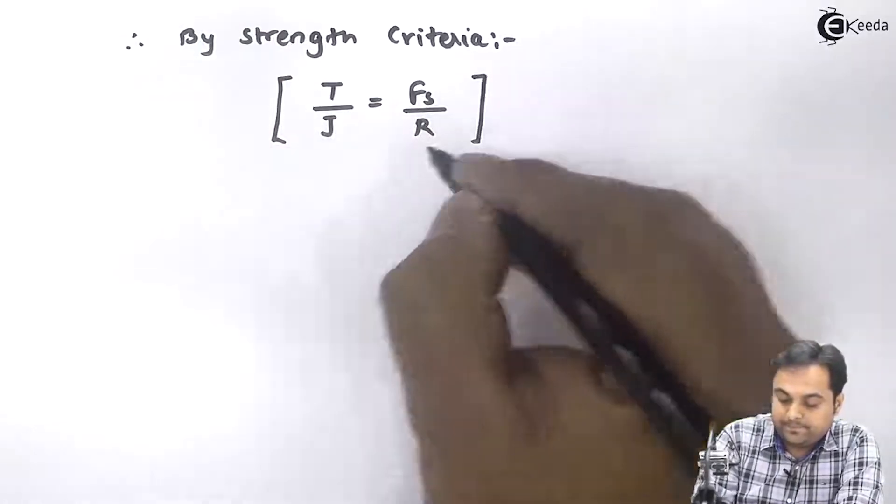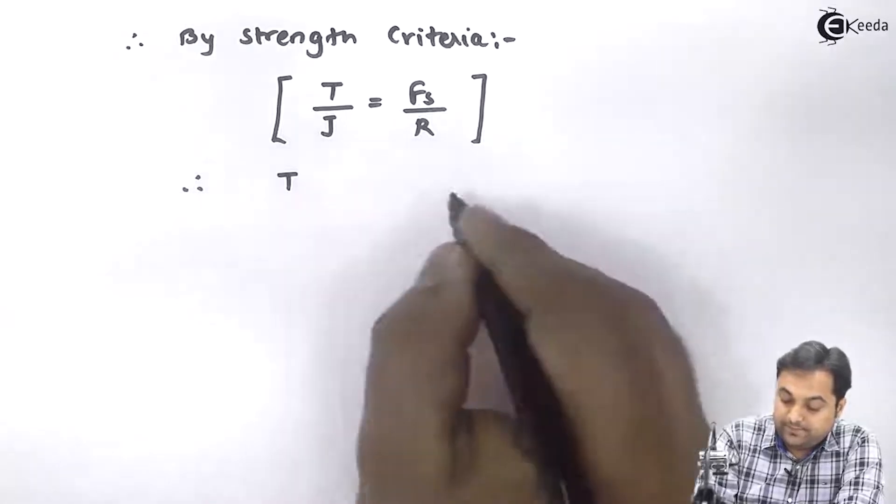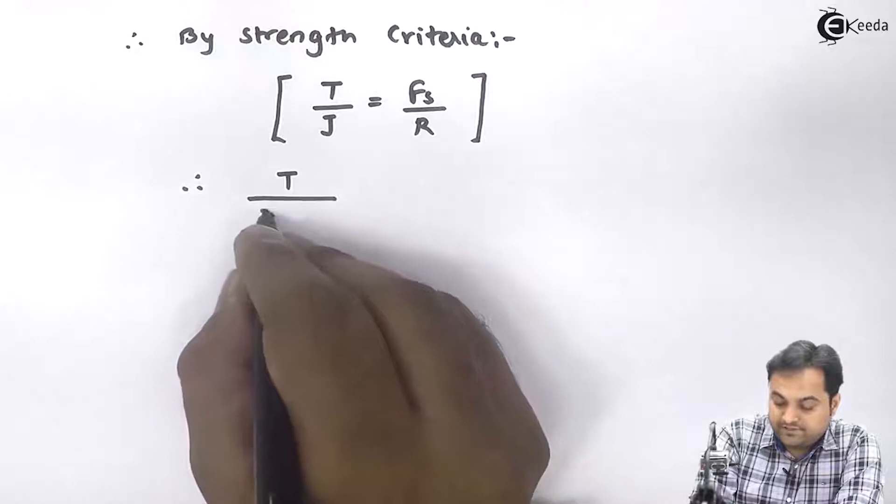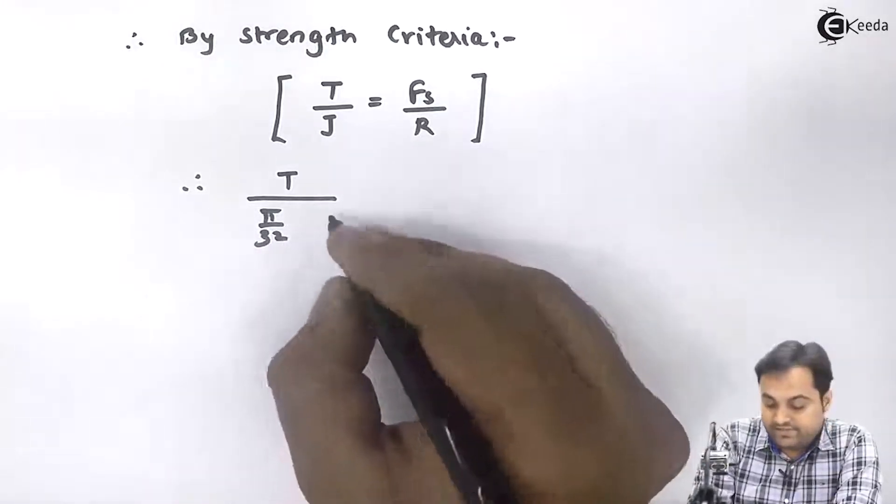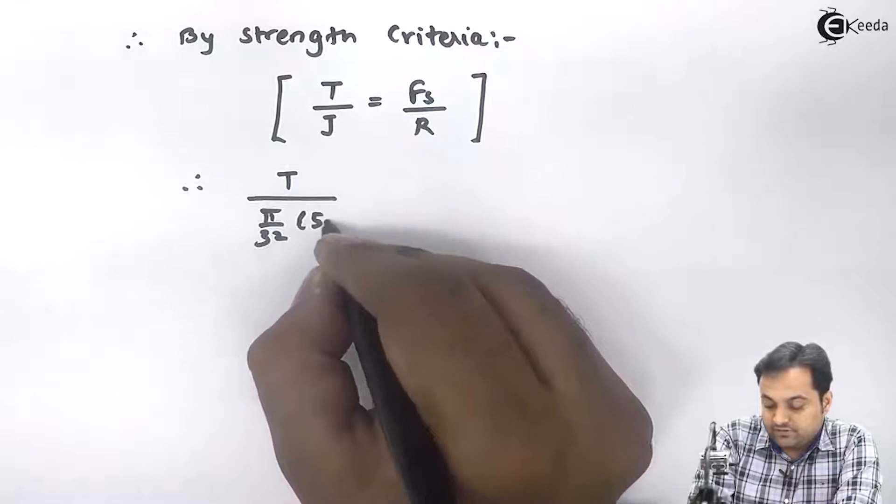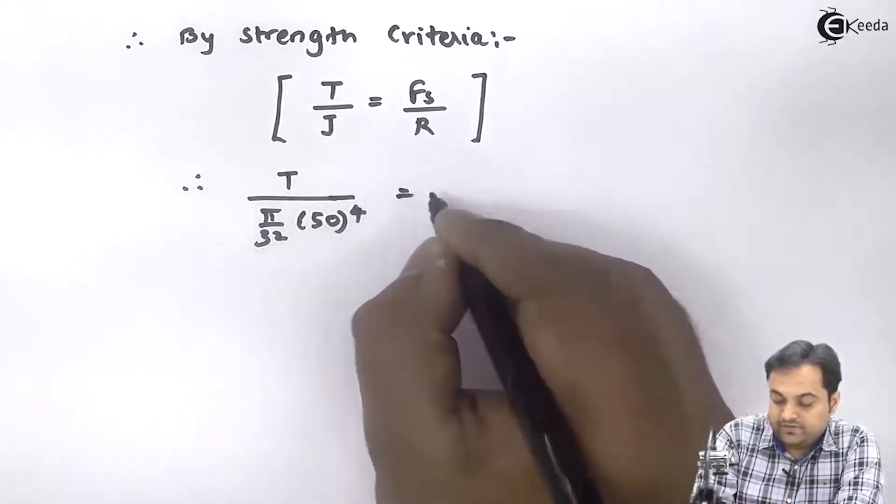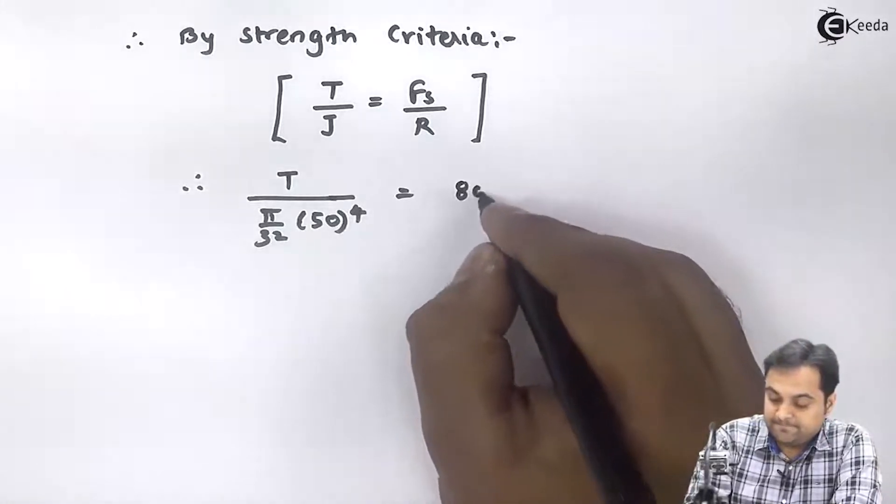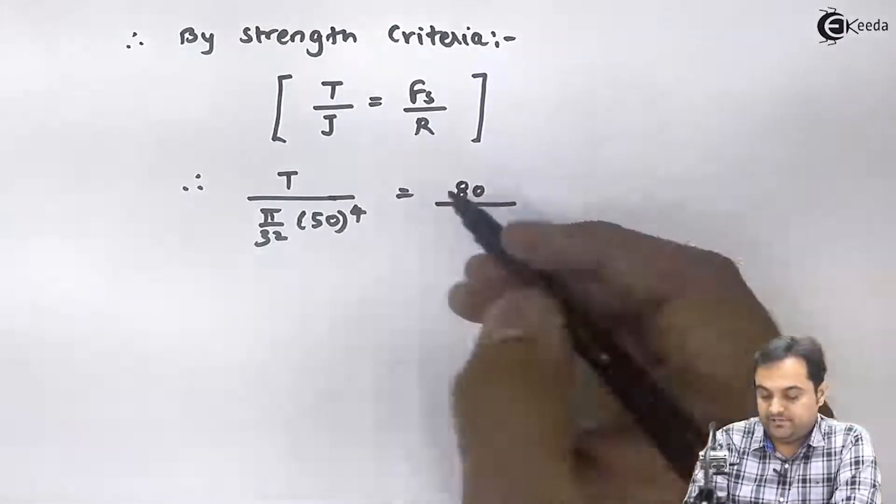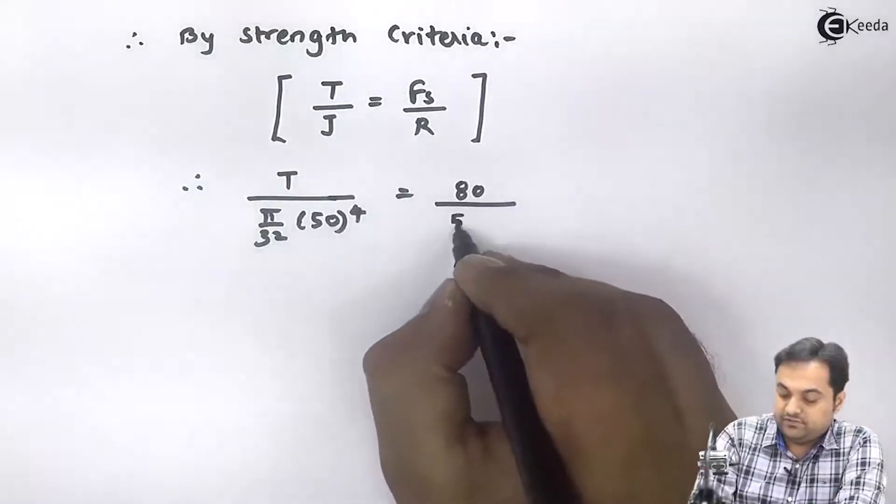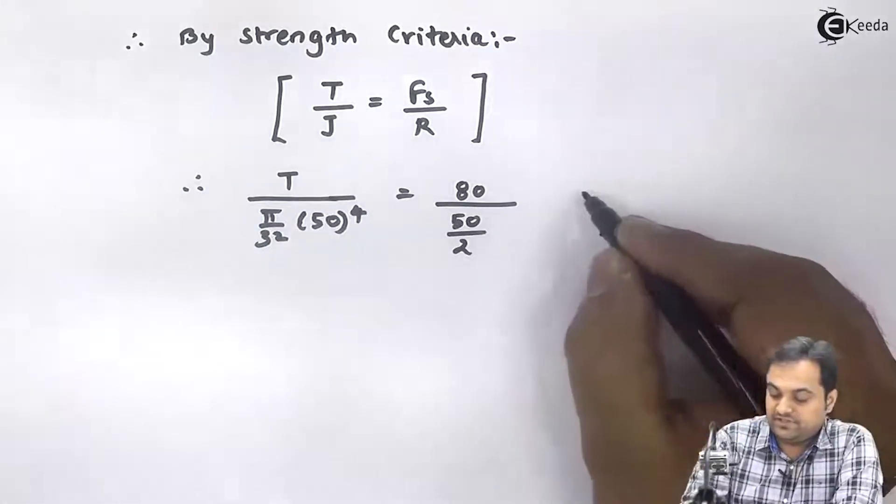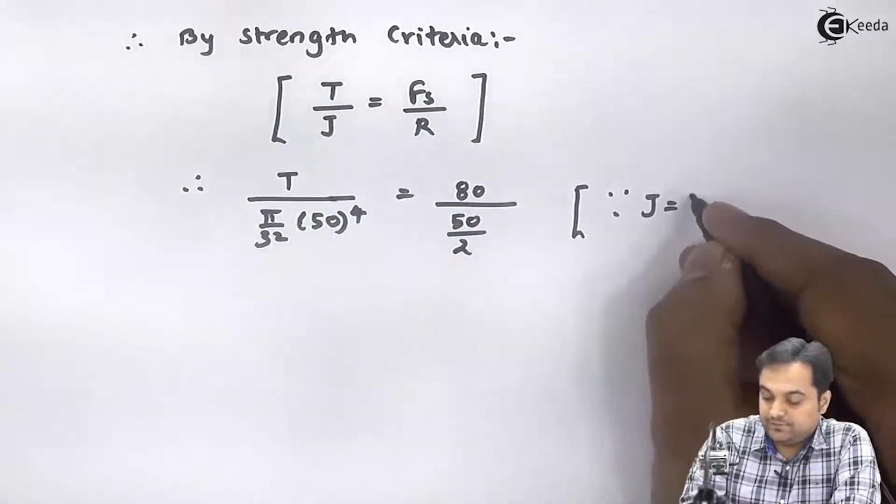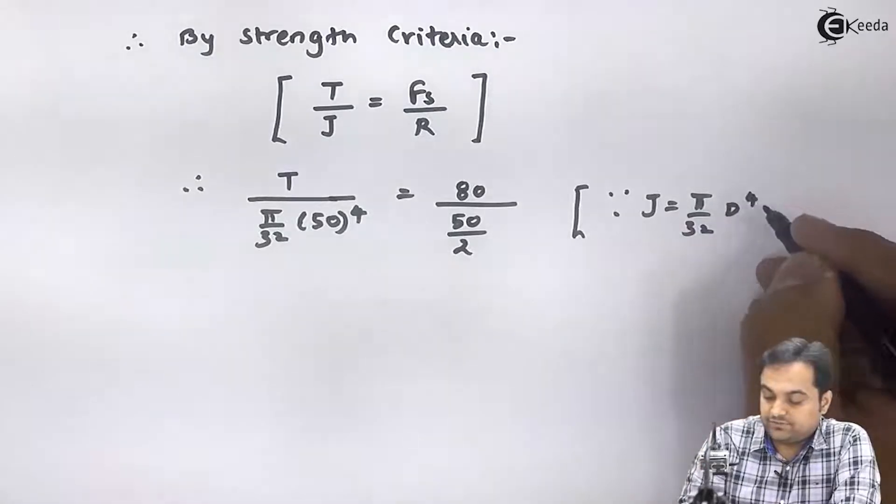Therefore T upon J, where J value is pi by 32 D raised to 4. Diameter is 50, so 50 raised to 4, is equal to FS is given as 80. Radius is diameter by 2, so here I have 50 by 2 as radius. I will write down, since J is equal to pi by 32 capital D raised to 4.